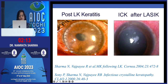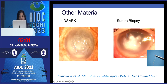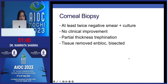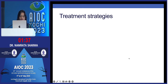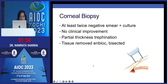In post-lamellar keratitis, remove the suture and scrape the infiltrate. In post-LASIK keratitis, lift the flap and send for scrape. If it is a DSAEK graft, send a small piece of the graft. If there is no epithelial defect but an abscess, perform a short suture biopsy — pass a needle with a short suture through the abscess and send for culture and sensitivity. Corneal biopsy is for twice-negative cases with no clinical improvement, removing tissue en bloc after partial thickness trephination.